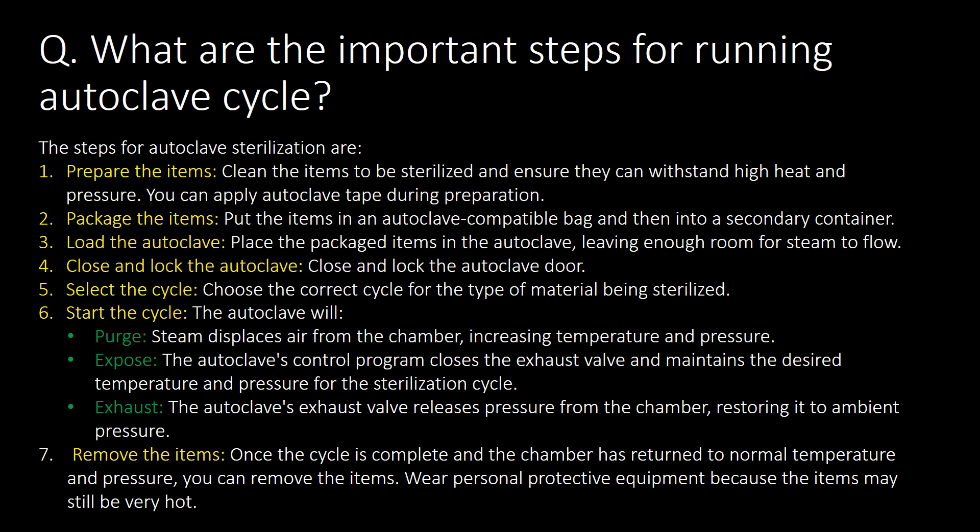What are the important steps for running an autoclave cycle? There are 7 steps. Step 1: prepare the items. Step 2: package the items. Step 3: load the autoclave. Step 4: close and lock the autoclave. Step 5: select the cycle. Step 6: start the cycle, which includes the purge phase, exposure phase, and exhaust phase. Step 7: remove the items.